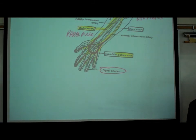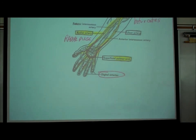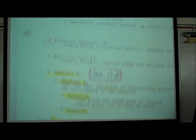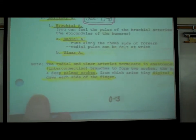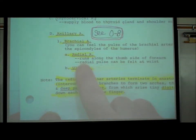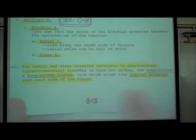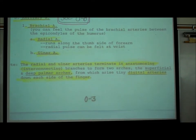That's how blood flows through the arm. All of these things were underlined back on page 03: axillary, brachial, radial, ulnar, palmar arch, and digital arteries.